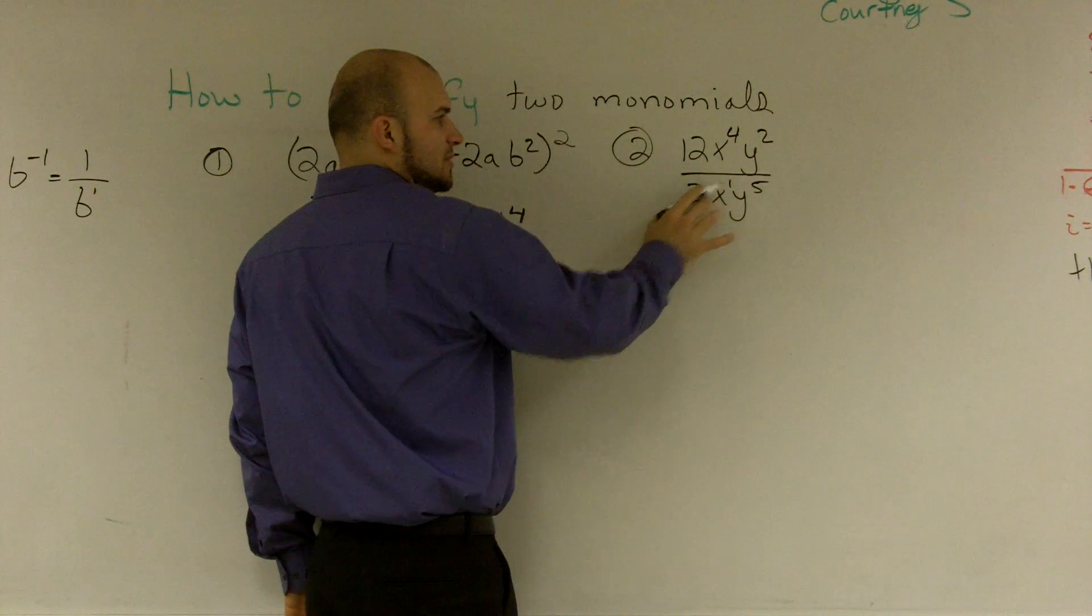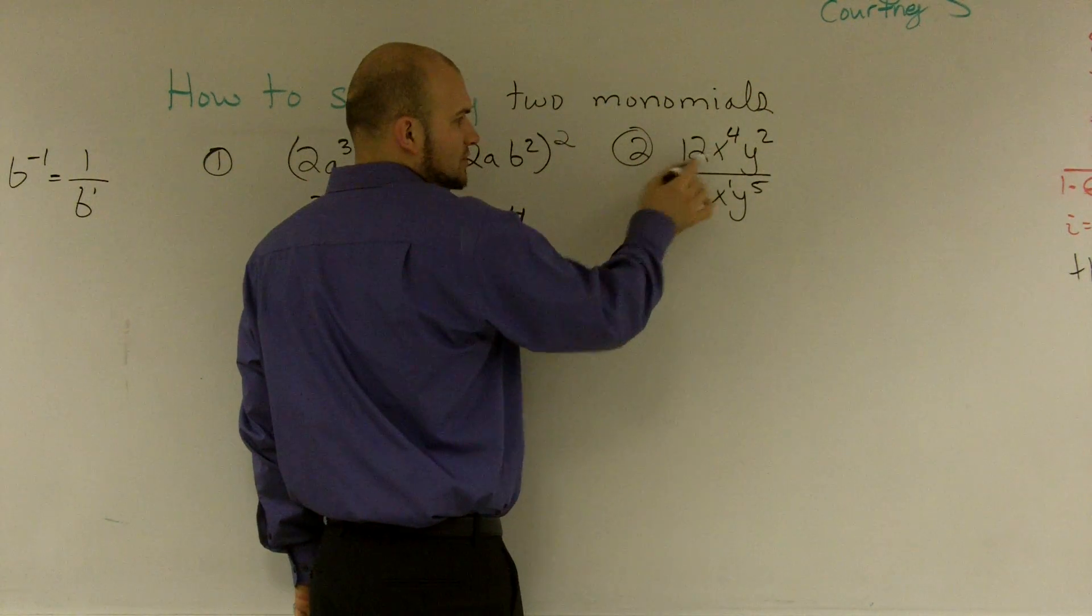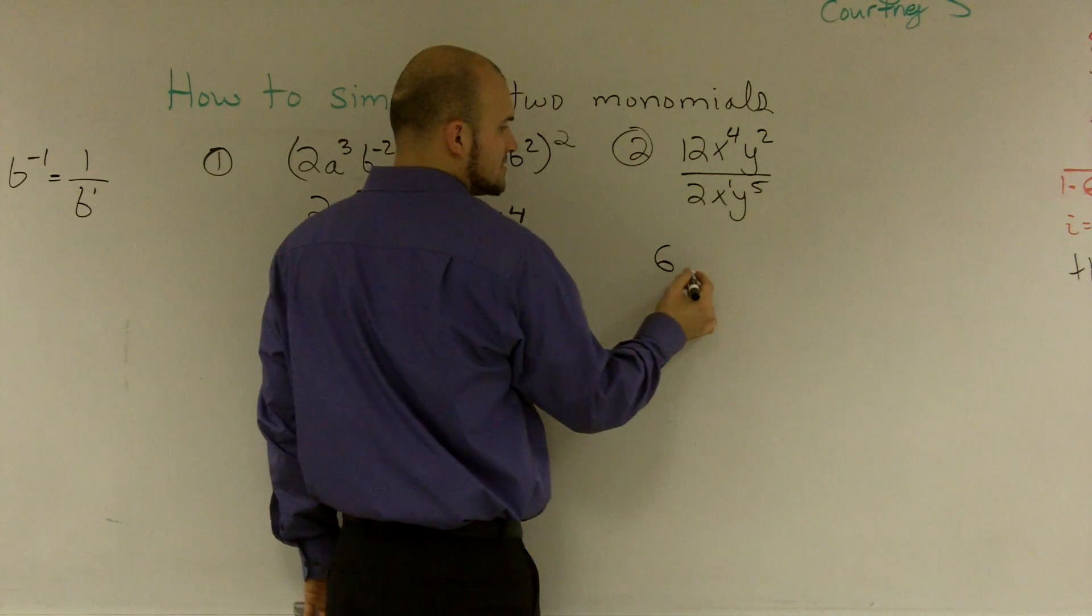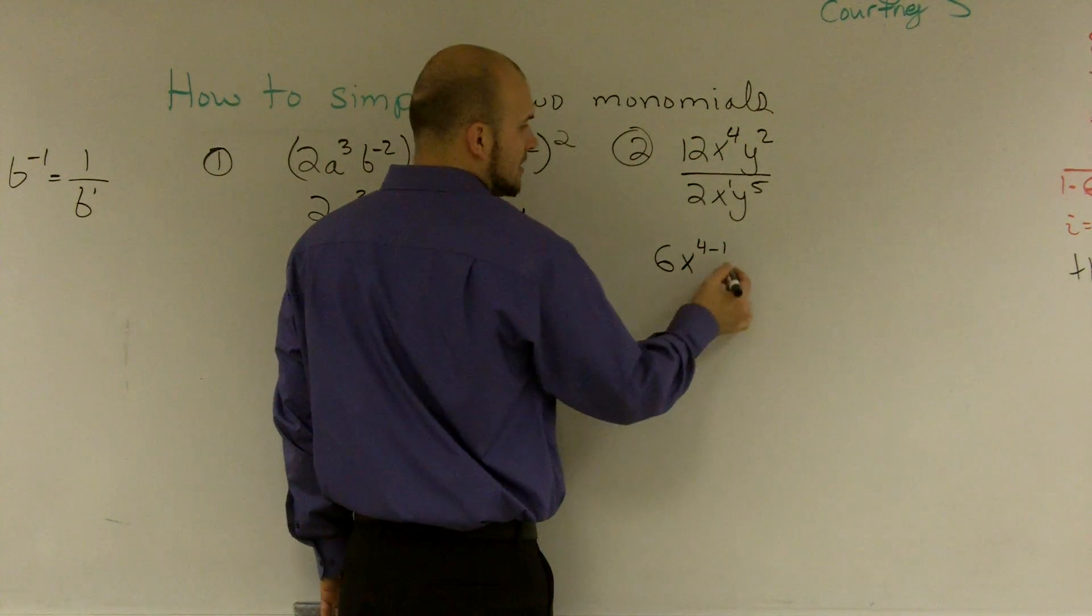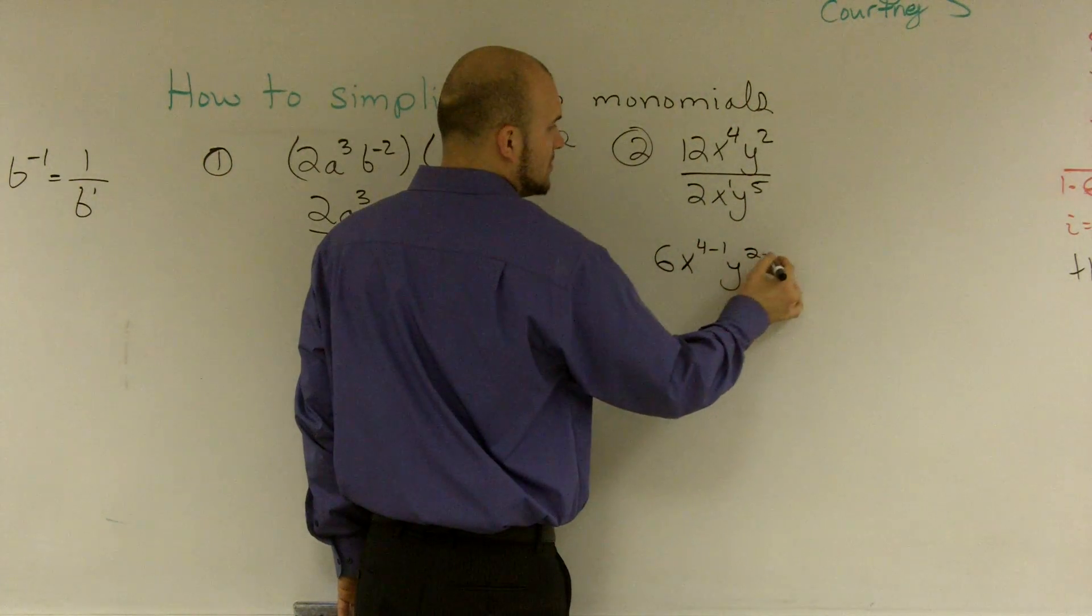Since I'm dividing, I'm going to subtract. Well, 12 divided by 2 is 6. Then we have x to the 4 minus 1, and y to the 2 minus 5.